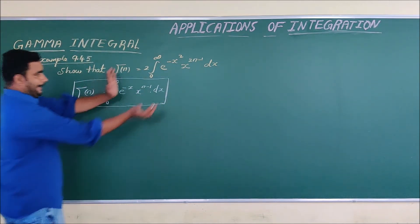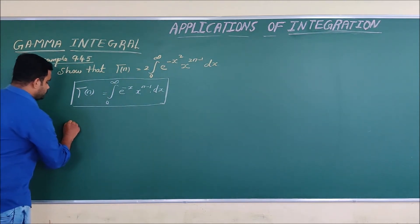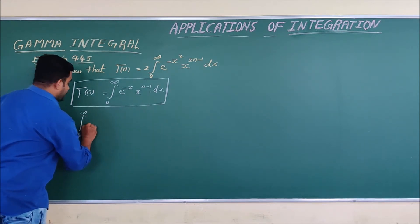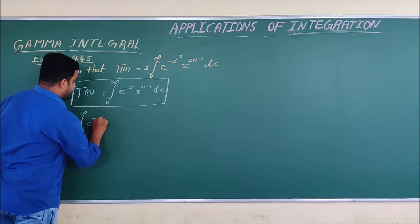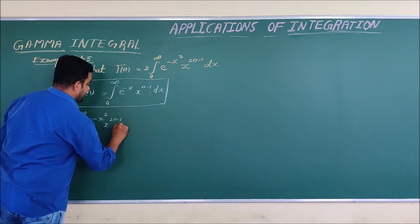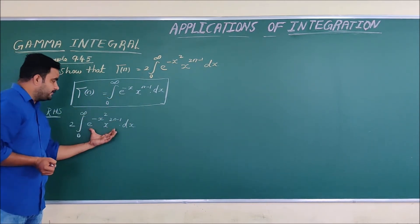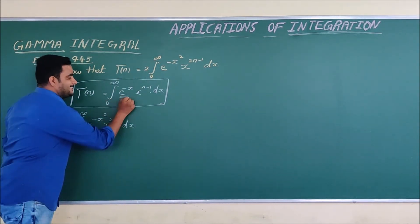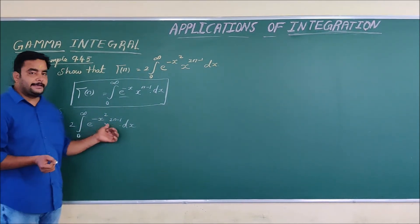We take the right-hand side and we have to prove the left-hand side. The right-hand side is 2 times the integral from 0 to infinity of e to the power of minus x squared, times x to the power of 2n minus 1, dx. Now, in the standard gamma integral we have e to the power of minus x, but here we have e to the power of minus x squared. So we will use the substitution method.